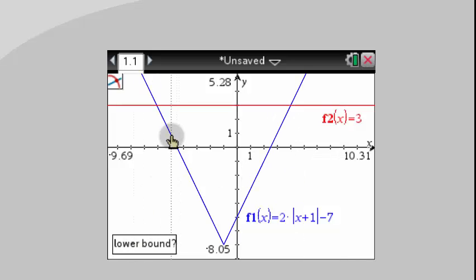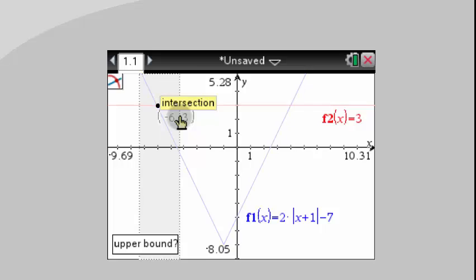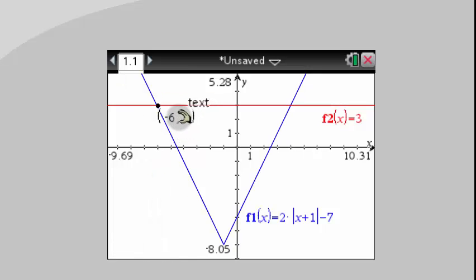It's going to ask me, what's the lower bound? So when I want to locate this point, I go left of the point. It's my lower bound. I move the cursor to the right for the upper bound, and it gives me this value. So it tells me the location of that point is negative 6, 3.